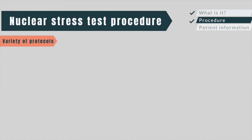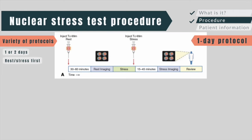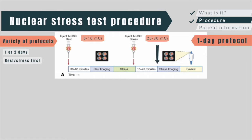A variety of protocols exist. You can either do the test in one or two days, and you can do the stress test first followed by the rest test or the other way around. A typical one-day protocol is to inject a low dose of the radiopharmaceutical with the patient at rest and to obtain the SPECT images 30 minutes later, when the background activity will have cleared from the blood. After the rest scan, the patient exercises and a larger dose of the tracer is given when the target heart rate is achieved, with SPECT images obtained 15 to 30 minutes later. The larger dose for the stress portion ensures that myocardial perfusion with exercise can be distinguished from the residual radioactivity left over from the rest study.